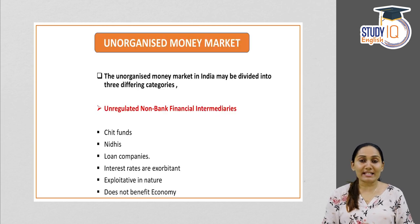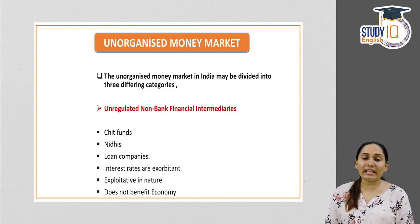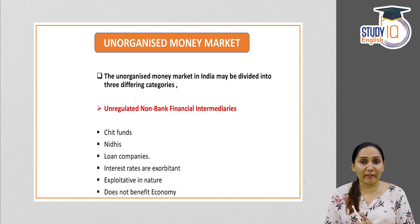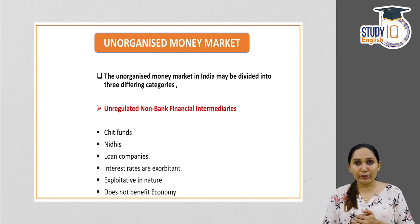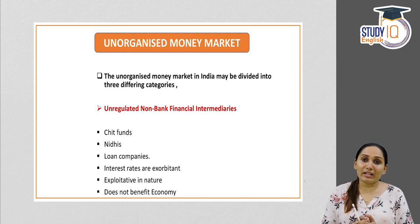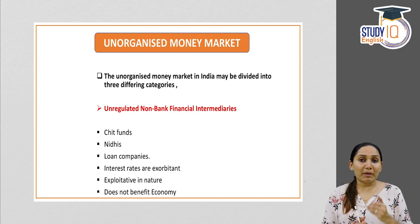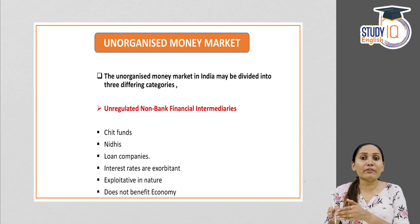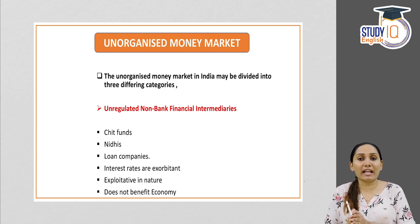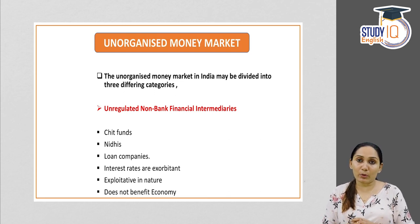We will get started with organized and unorganized money market, but before that we will quickly revise what is money market. Indian financial market can be broadly divided into two categories: money market and capital market. A money market deals with financial instruments which have a maturity period of less than one year, whereas capital market deals with financial instruments which have a maturity period of more than one year.